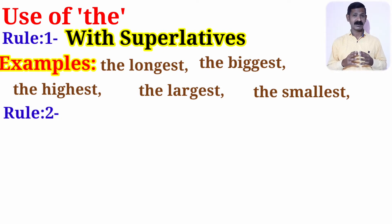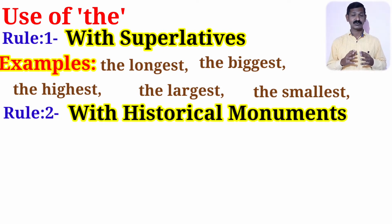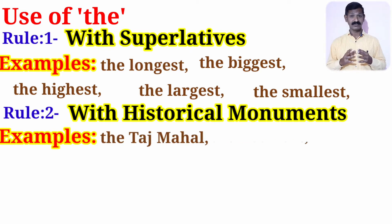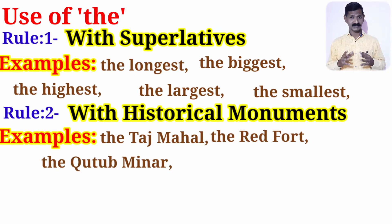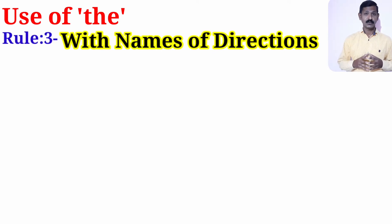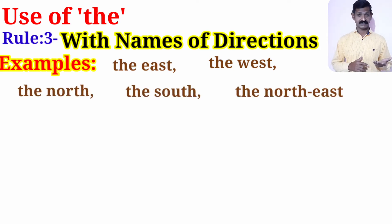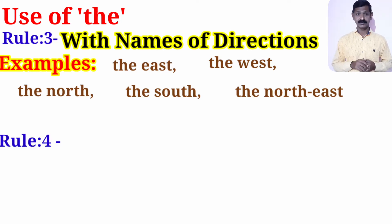Second rule: we use article 'the' with historical monuments. For example: the Taj Mahal, the Red Fort, the Qutub Minar, the Gol Gumbaz. We also use article 'the' with the names of directions — for example: the east, the west, the north, the south, the northeast, and so on.